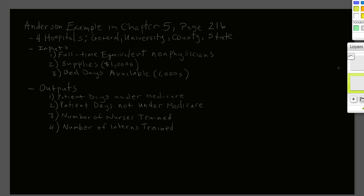Students, this is part two of our data development analysis video series. There is an example in the Anderson text in Chapter 5, page 216, where Anderson looks at four hospitals: General Hospital, University Hospital, County, and State Hospitals. Each of these hospitals utilizes three inputs: